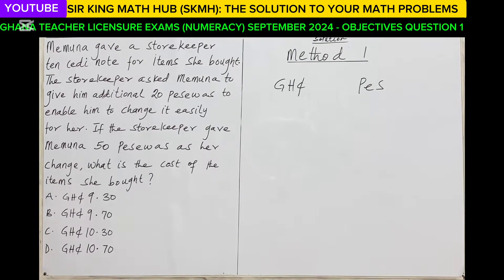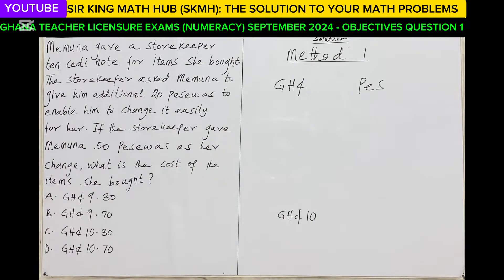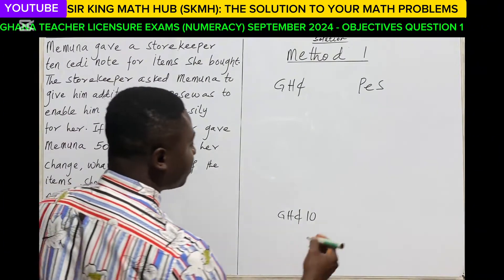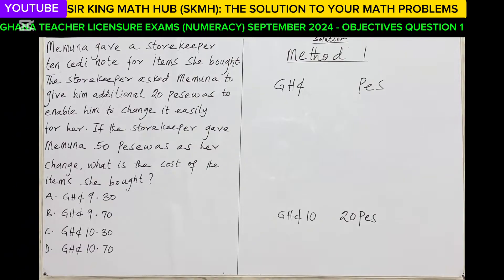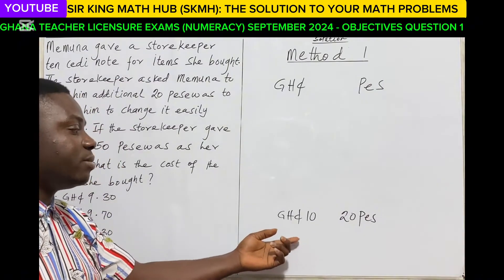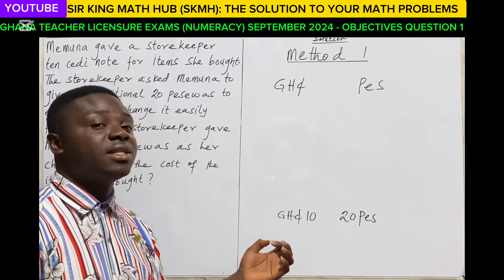Objective question 1. This is a question under measurement of money. Memuna gave a storekeeper 10 cedi notes for items she got. The storekeeper asked Memuna to give him an additional 20 pesewas to enable him to change it easily. So in addition to the 10 cedis, Memuna also gave 20 pesewas to facilitate the change she will receive from the storekeeper. So she gave the storekeeper 10 cedis and 20 pesewas.